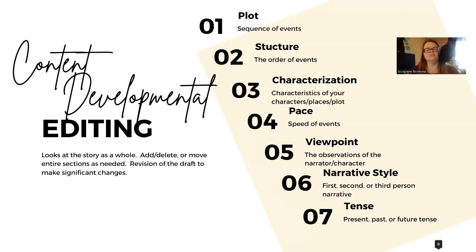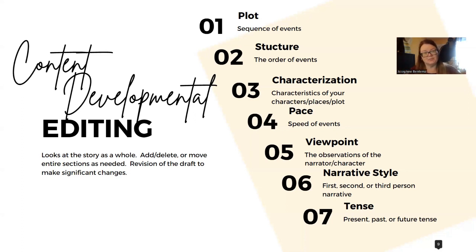There are different things we look at, like your plot — the sequence of events. Is it actually happening correctly? Are there plot holes or gaps in the story? Number two is structure — is the order of events correct? If something happened over here but it wasn't established yet over there, that's what content developing is about: fleshing out what you've already got and making it better.